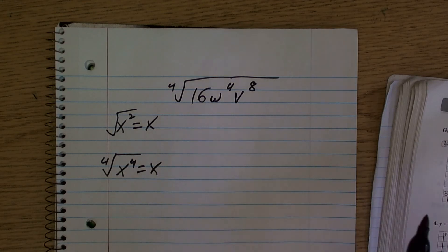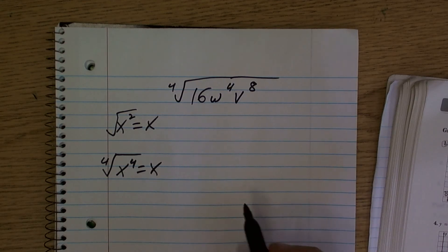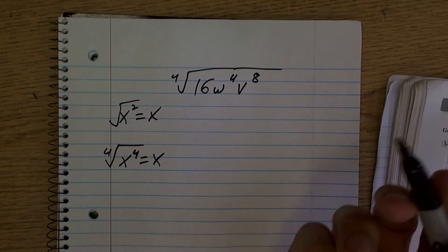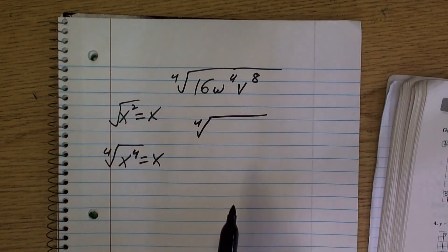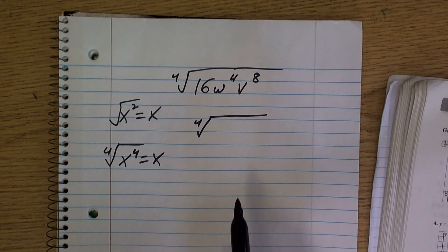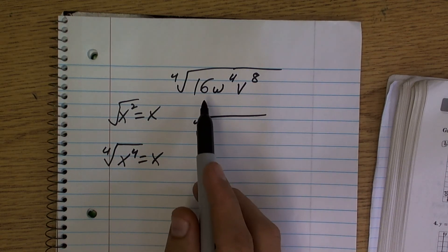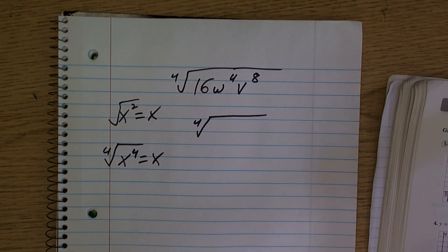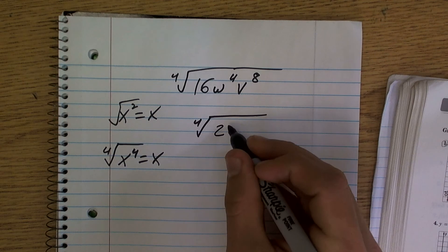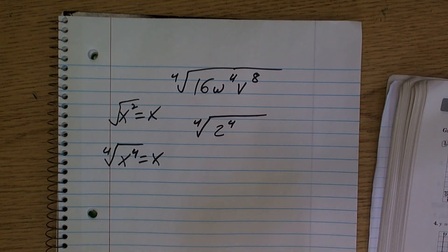So we need the fourth power. I need to represent 16 as a number raised to the fourth power. You can automatically just start thinking what numbers raised to the fourth power are going to equal 16. Well, 1 raised to the fourth power is going to be 1, and 2 raised to the fourth power equals 16.